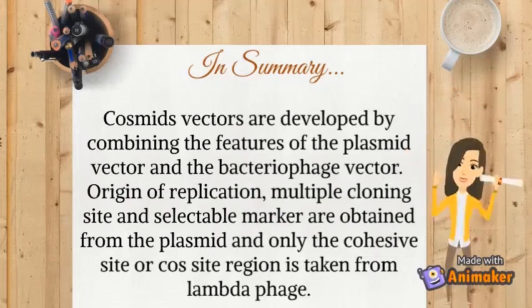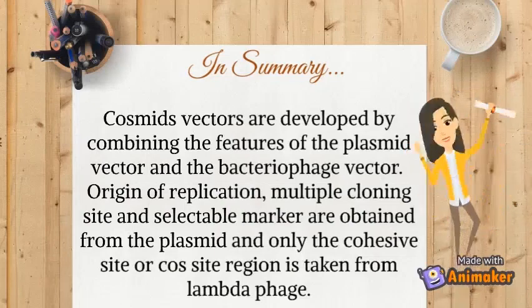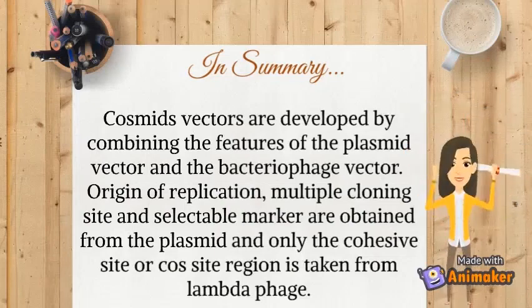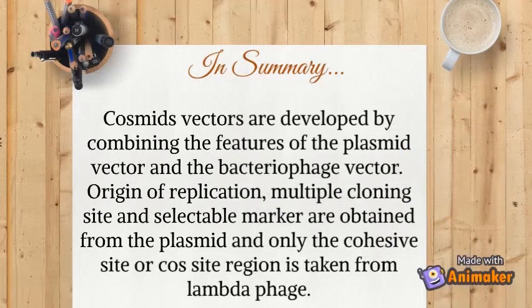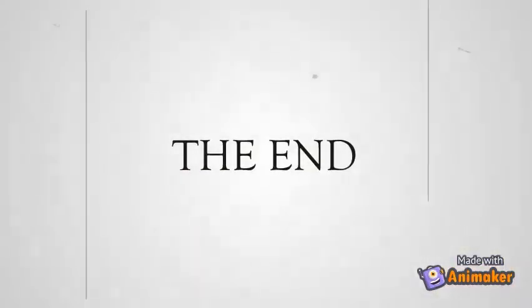In summary, cosmid vectors are developed by combining the features of the plasmid vector and the bacteriophage vector. The origin of replication, multiple cloning site, and selectable markers are obtained from the plasmid, and only the cohesive site or cos site region is taken from lambda phage. That is all for the discussion about cosmid vectors. Thank you for watching.